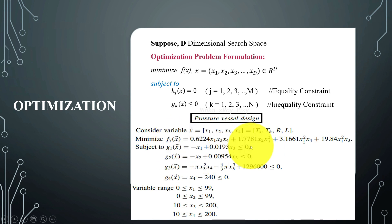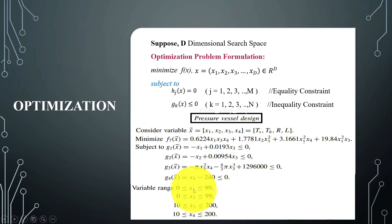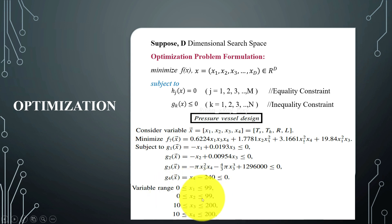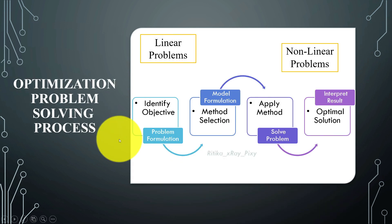We have different inequality constraints, and we need the values for variables x1, x2, x3, and x4 within a specified range. This is the optimization problem for the engineering design problem.